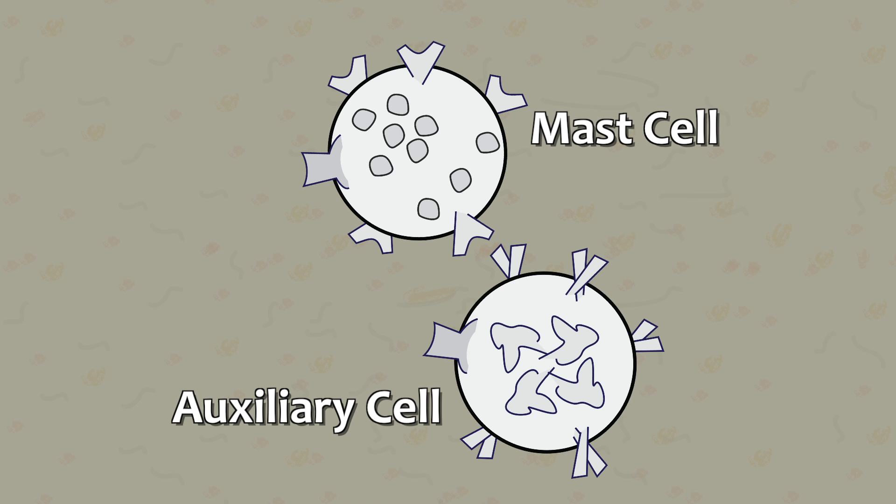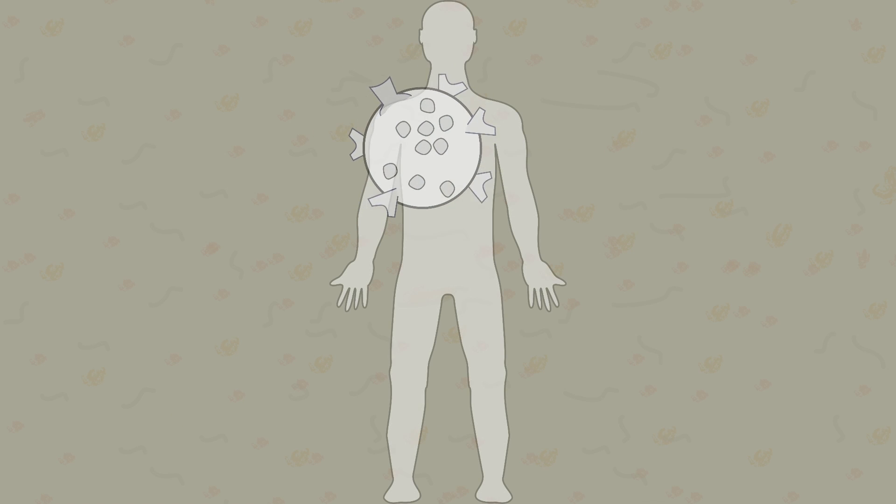These two types of white cells have some complementary functions. Mast cells are more complex in that they can produce many different types of substances to perform a variety of functions, while auxiliary cells are more focused. Let's begin by looking at the mast cell,